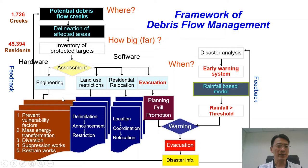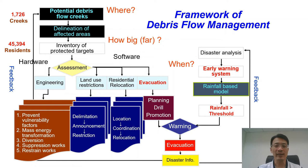Traditionally, we use a lot of engineering constructions to prevent it from happening, but they cost a lot of time and money. Recently, the government turned to some software measures, like land use restrictions and relocation of local people, but people will complain and sometimes even protest against those measures. So far, the only way the government can act is to evacuate people during an emergency. If we want to evacuate people, we have to have a reliable early warning system, which is usually based on rainfall criteria in different places.